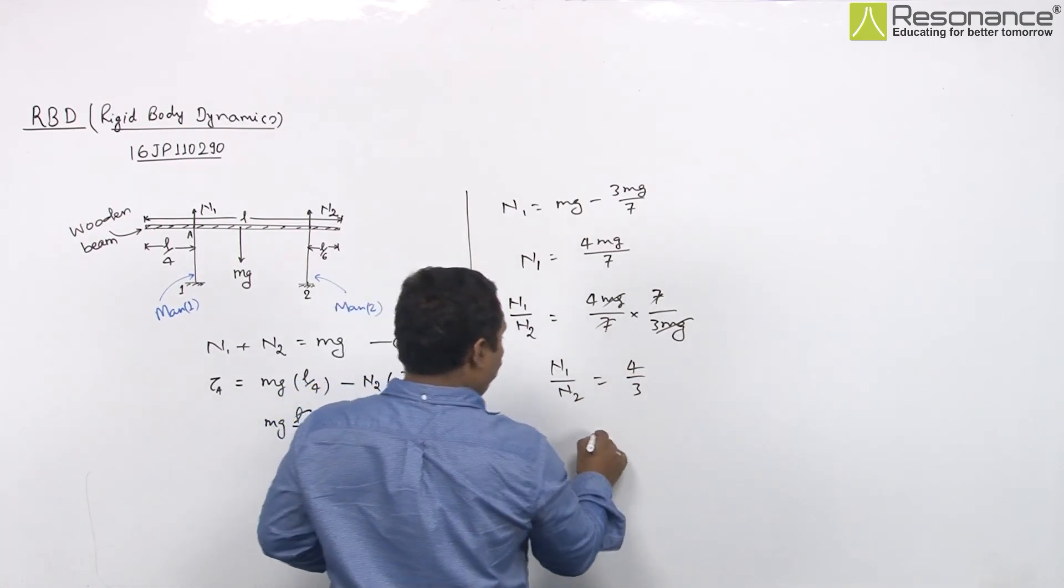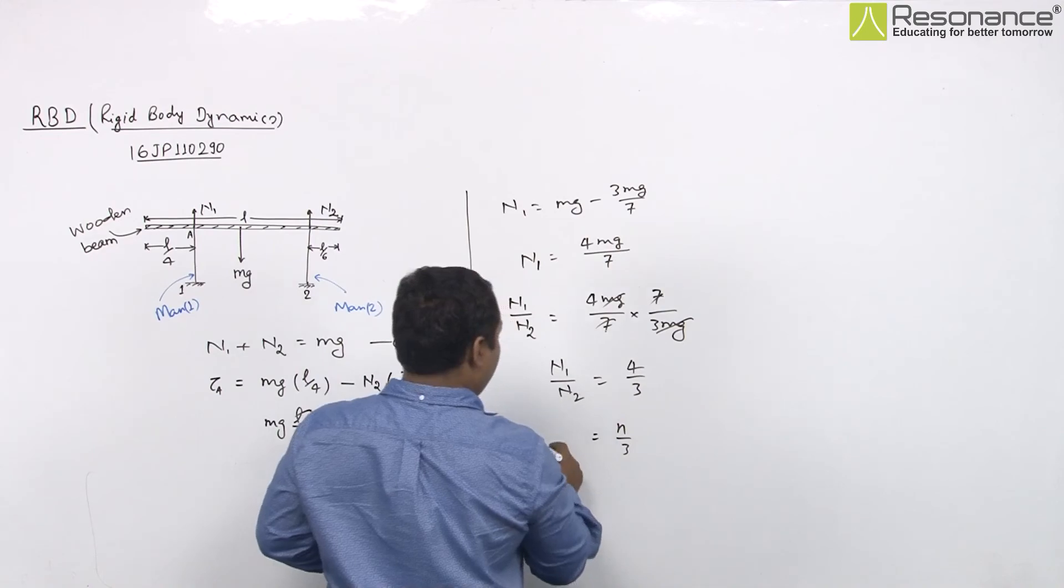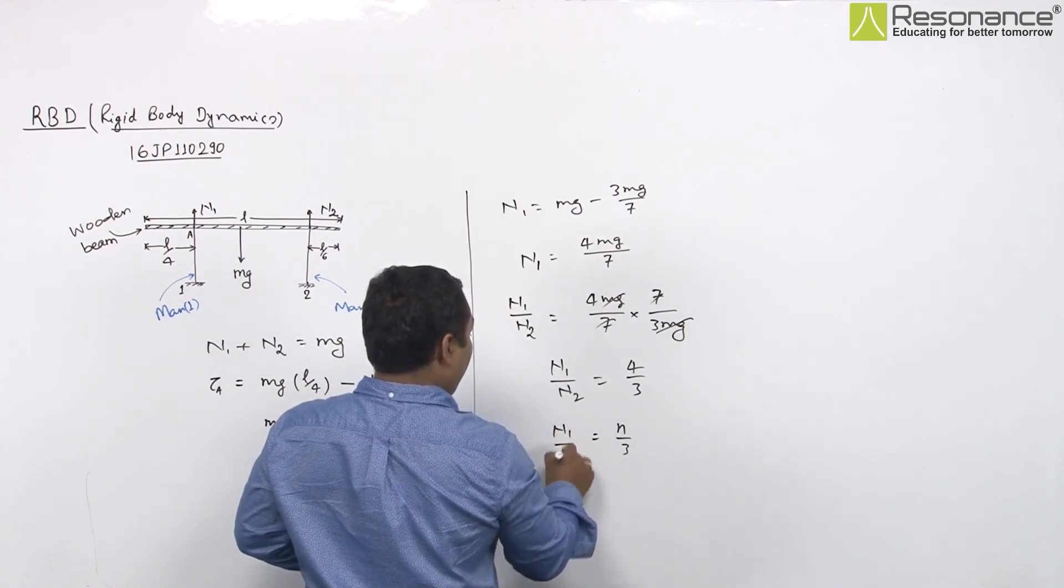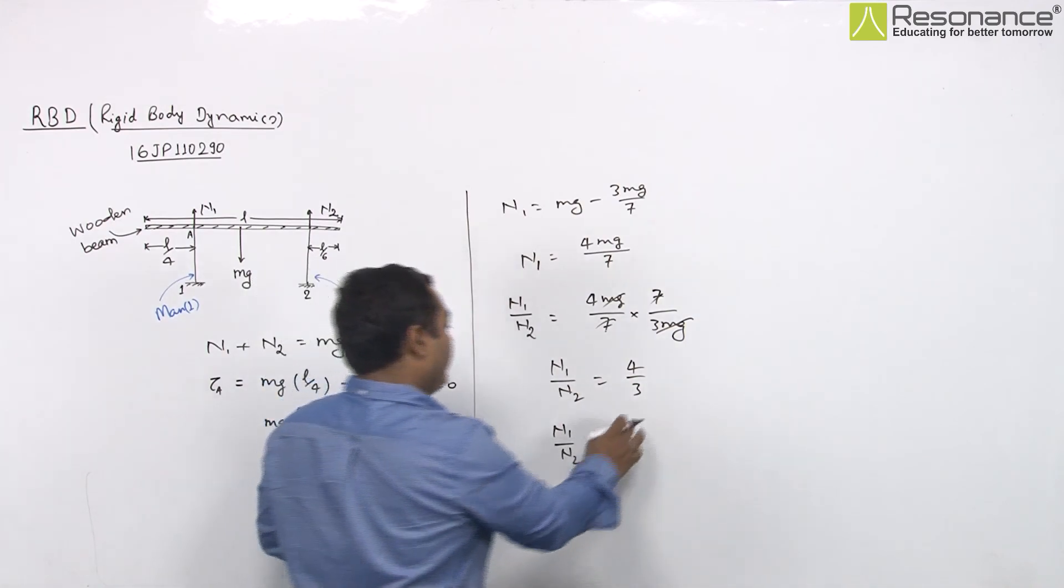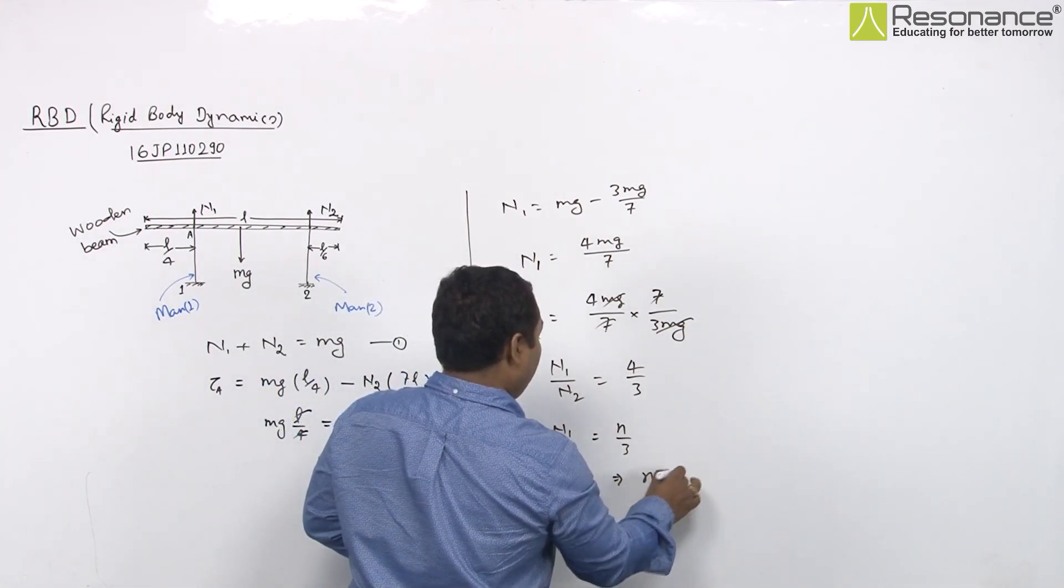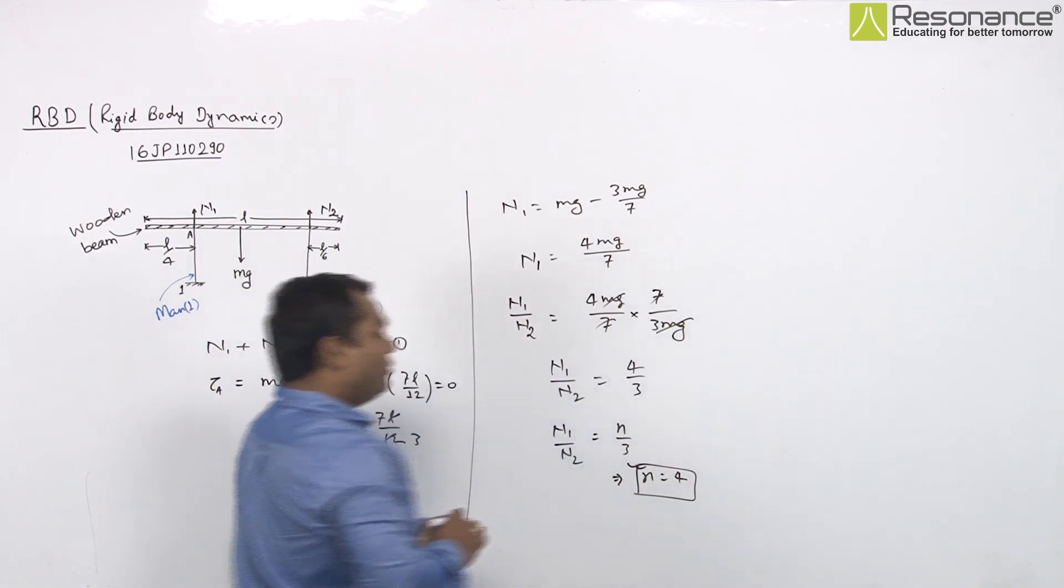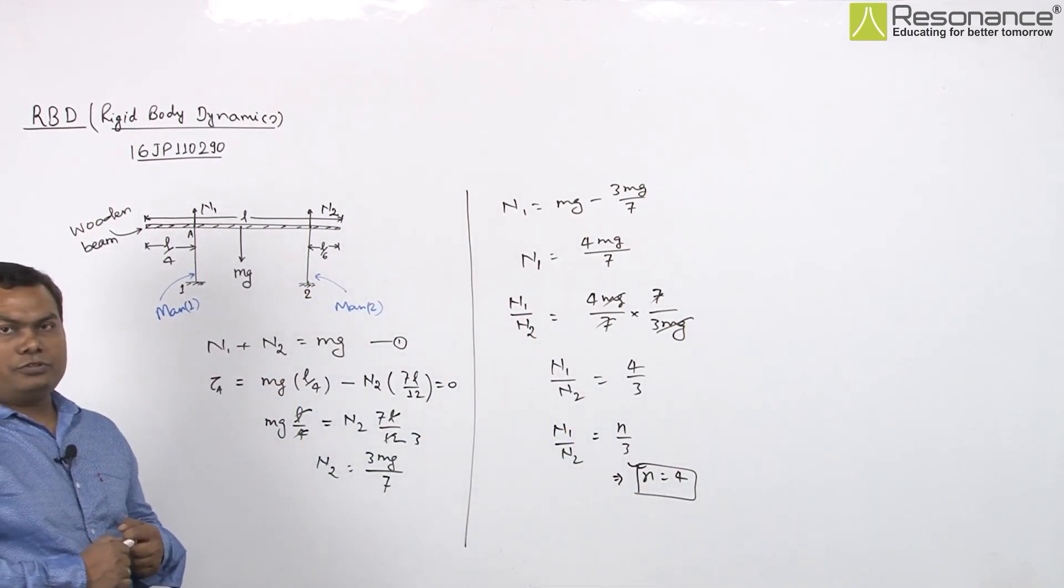In the question it is given as N/3. So on comparing these two equations we can say the value of N will be simply equal to 4. This is our desired result for the question.